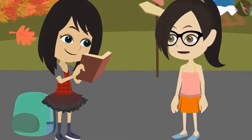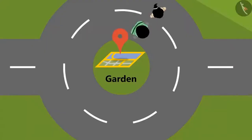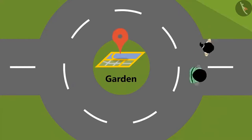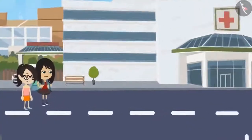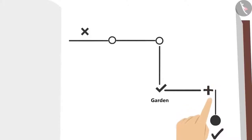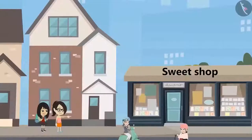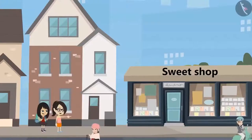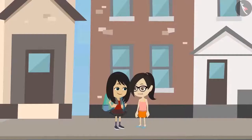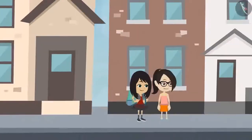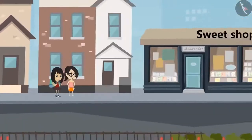Yes, now I got it. Let's go. Look, there is a hospital. According to this drawing, we should take a right turn. See, the sweet shop is there. Madam's house must be in front of the shop. Look, madam is standing there.